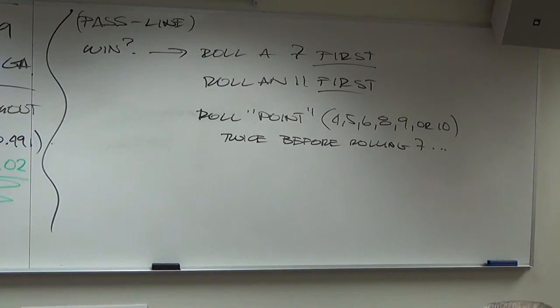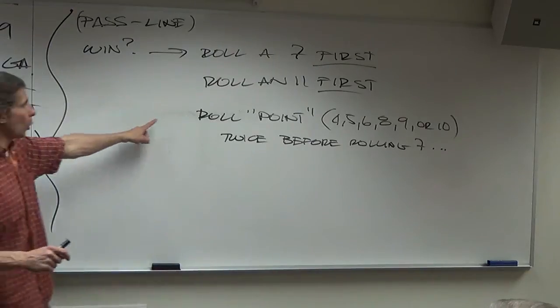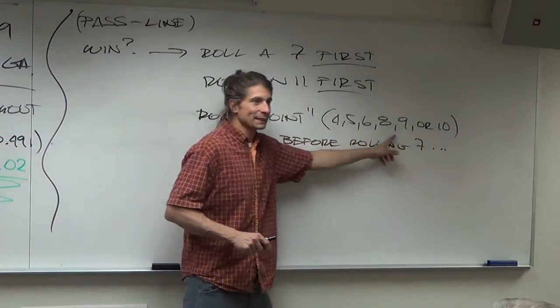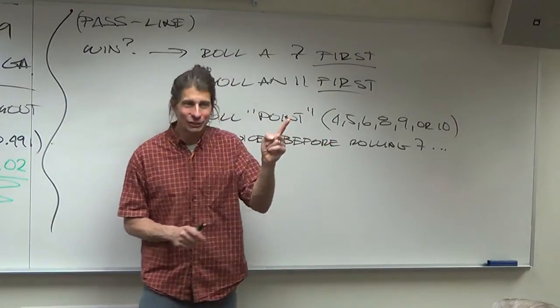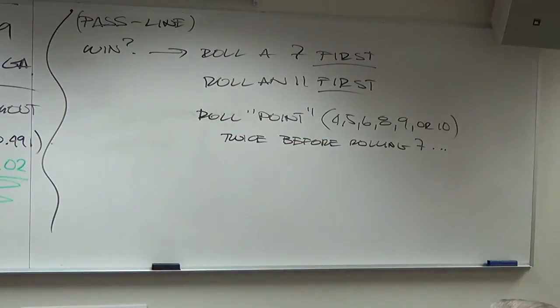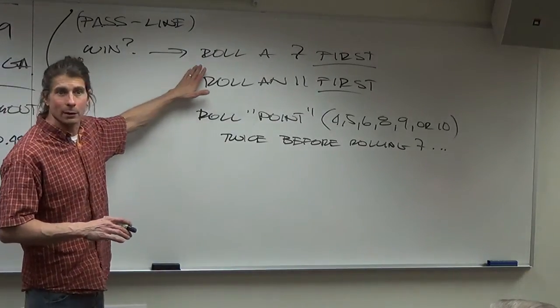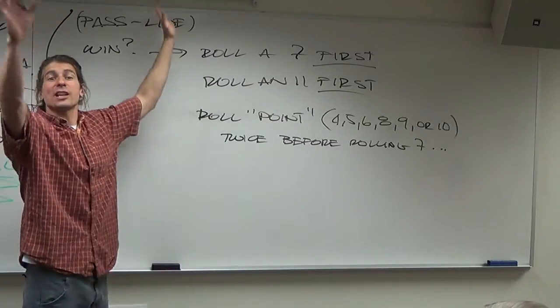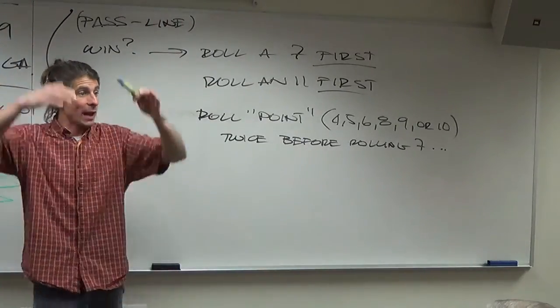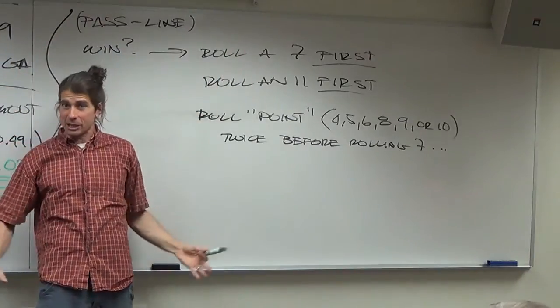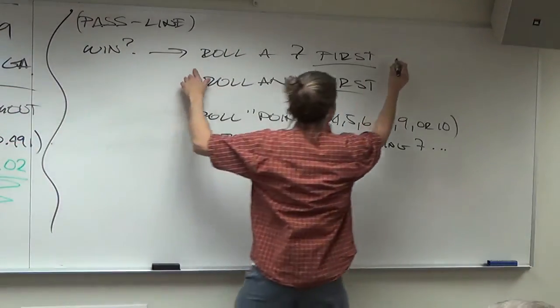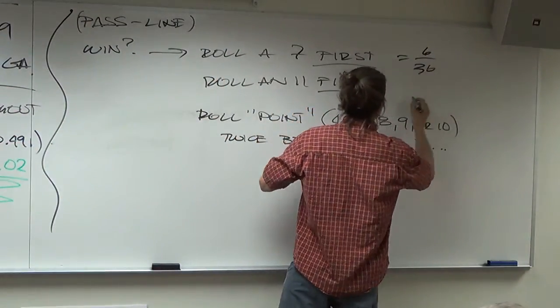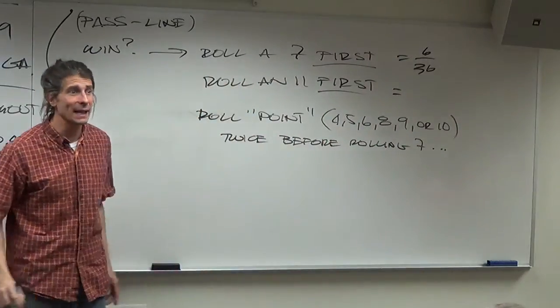So there's only two numbers that matter if you rolled one of these six. And those two numbers are that number and seven. So that's what's genius about this calculation. Now, some of these we know the answer to already. What's the chance of rolling a seven off the bat? We figured this out yesterday. Six out of 36. It's six out of 36, right? Remember they had the chart up on the board with all the outcomes? We'll keep it out of 36 to make the math a little bit easier.